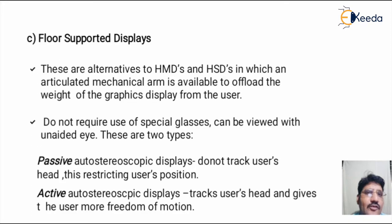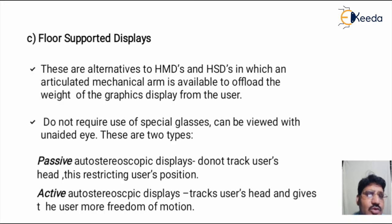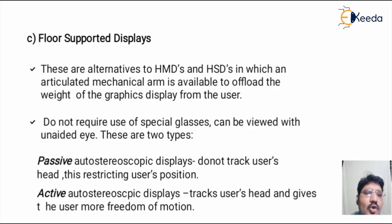Next is floor supported display devices. These are an alternative to HMDs, in which an articulated mechanical arm is available to offload the weight of the graphics display from the user. There are two types: passive and active. The passive display does not track the user's head, restricting the user's position. The active type tracks the user's head and gives the user more freedom of motion.